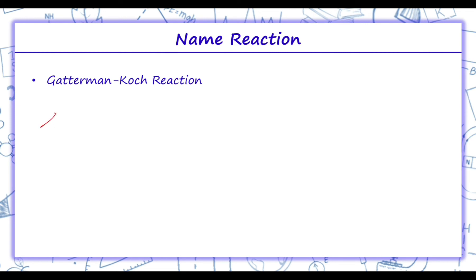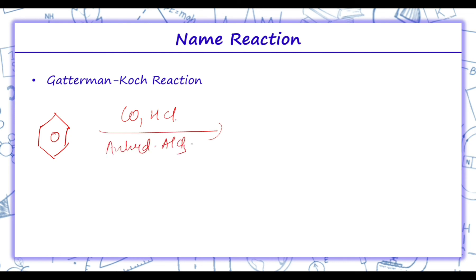Gattermann-Koch reaction: benzene or its derivatives, when treated with carbon monoxide and HCl in the presence of anhydrous aluminium chloride or cuprous chloride, we get benzaldehyde or substituted benzaldehyde. This is the Gattermann-Koch reaction.